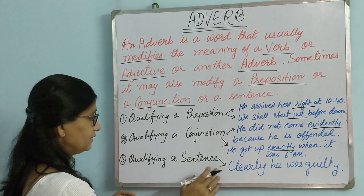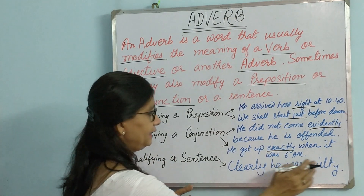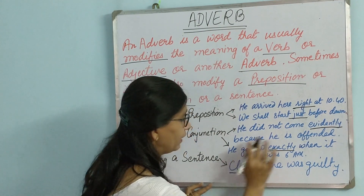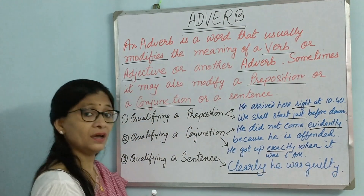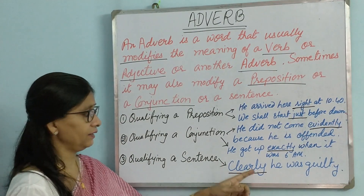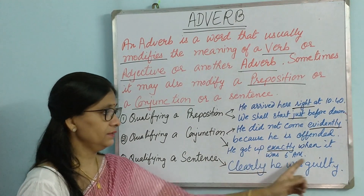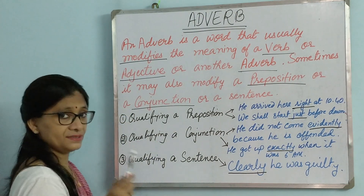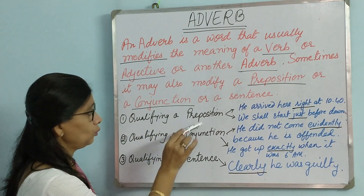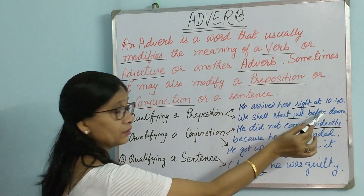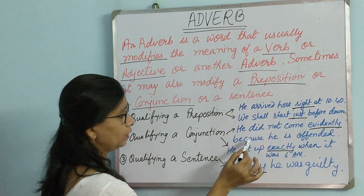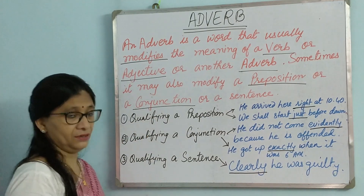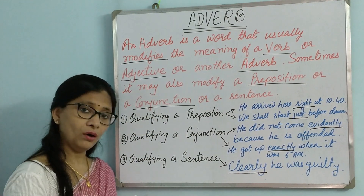Now look at qualifying a sentence: 'Clearly, he was guilty.' Here 'clearly' is an adverb qualifying the whole sentence 'he was guilty.' So to summarize, an adverb can qualify a preposition ('at,' 'before'), a conjunction ('because,' 'when'), and even a full sentence. These are the functions of an adverb.